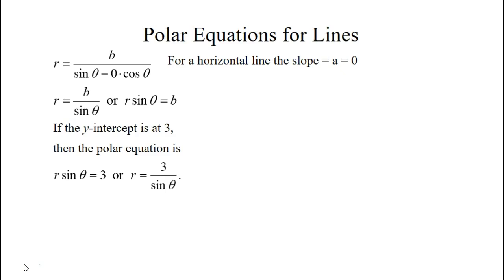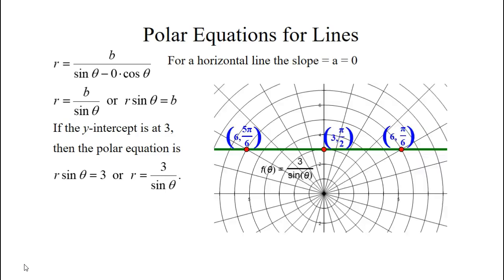So let's do an equation. We have r sine theta equals 3, or r equals 3 over sine theta. I plotted some points and you can see that they lined up horizontally.